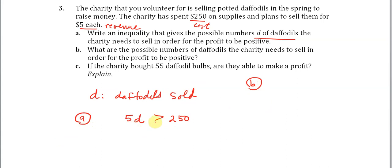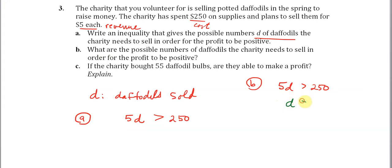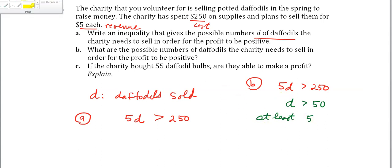We just solve this inequality. Divide both sides by five and we get D is greater than 50. So we need to sell more than 50 — actually at least 51, because this is a strict inequality. You can't sell half a daffodil, so at least 51 daffodils.